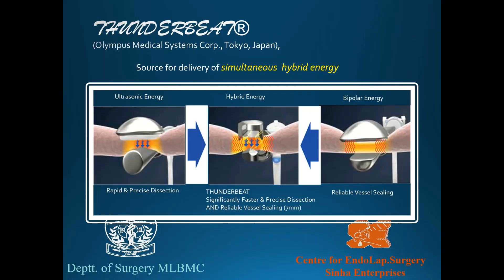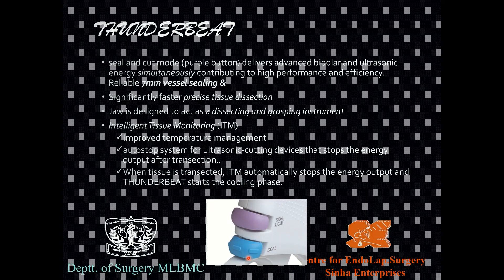When you combine electrosurgery with ultrasonic energy the result is the Thunderbeat — an instrument combining ultrasonic energy with bipolar electrical energy. The ultrasonic component allows rapid and precise dissection while the bipolar energy enables reliable vessel sealing. Together they provide faster, precise dissection and reliable vessel sealing up to 7 mm. The Thunderbeat probe has two buttons: purple for seal-and-cut, and blue for seal only. The seal-and-cut mode delivers both bipolar and ultrasonic energy.